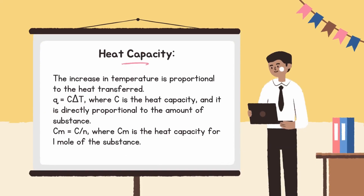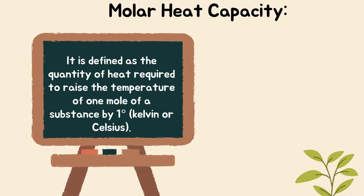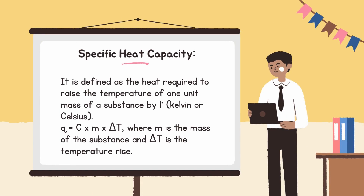Next is heat capacity: the increase in temperature is proportional to the heat transferred, Q equals C·ΔT, where C is the heat capacity, and it is directly proportional to the amount of substance. C_m equals C divided by n, where C_m is the heat capacity for one mole of the substance. Molar heat capacity is defined as the quantity of heat required to raise the temperature of one mole of a substance by one degree Kelvin or Celsius. Specific heat capacity is defined as the heat required to raise the temperature of one unit mass of a substance by one degree Kelvin or Celsius: Q equals c·m·ΔT, where m is the mass of the substance and ΔT is the temperature rise.